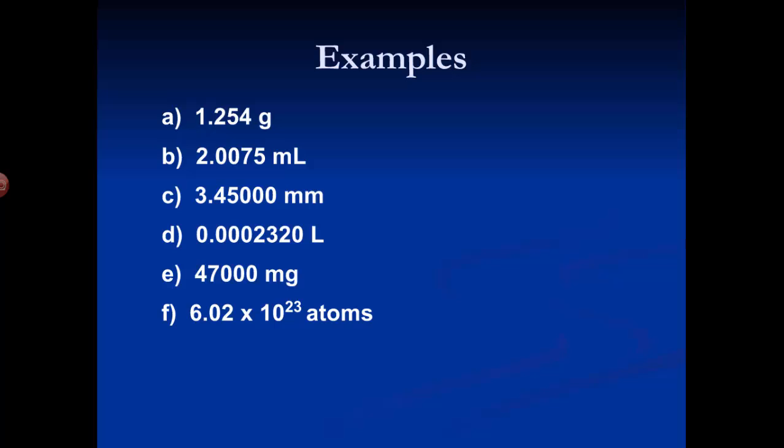Are you ready? Let's take a look at your answers. A: 1.254 grams. Rule number one says all non-zero digits are significant, so all four of those digits are significant — four sig figs. The next one: 2.0075. The 2, the 7, and the 5 are significant by rule one. The zeros are between non-zero digits, so by rule two they're also significant. That means there are five significant figures in that number.